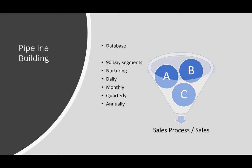Everything in the funnel is going to, at some point, come out into the sales process — and that's your nurturing. You're going to nurture long-term and short-term. That means daily — there's daily nurturing with ongoing upfront people to meet. Monthly is following up with some of those people you've talked to. There's quarterly, so you're staying on the drip quarterly. And there's even annually, so you're making sure you're touching base with people over a long period of time.